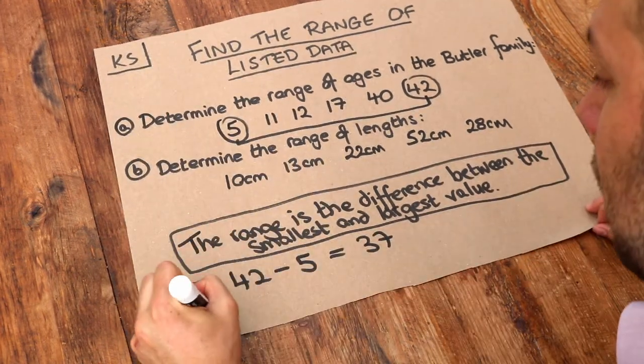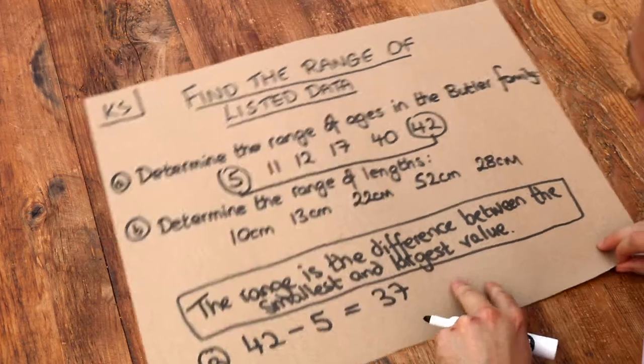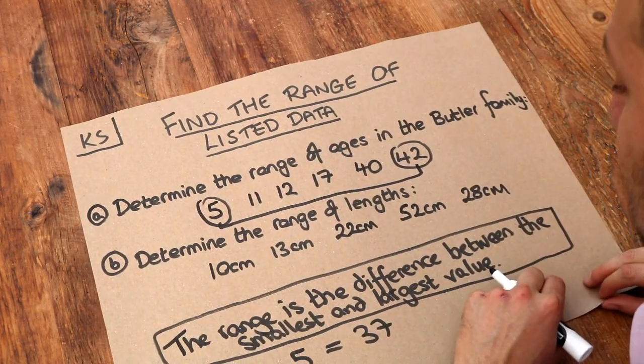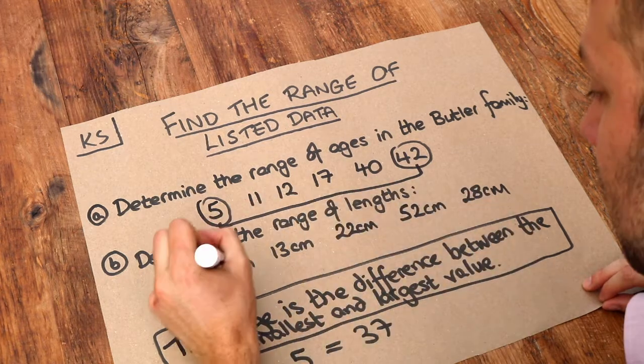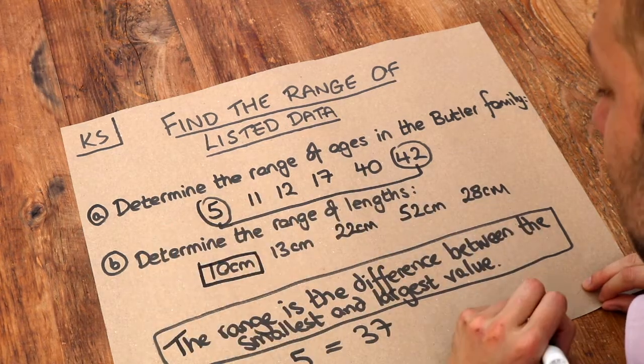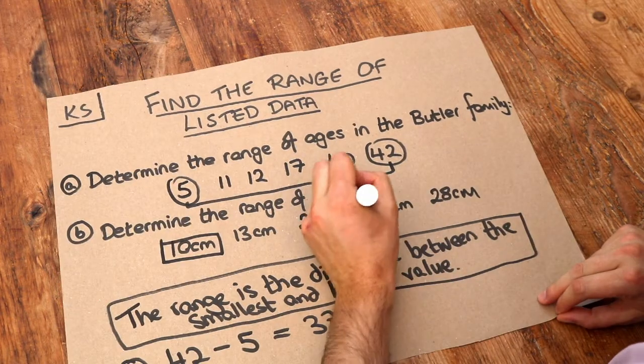And what about B? Now this one's slightly harder because I haven't put the lengths in order. Let's find the smallest and the largest. Well which of these values is the smallest value? Well it's the 10 here. And what's the largest value? Well it's the 52 here.